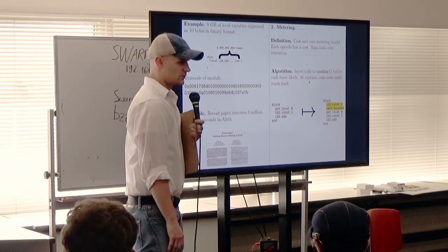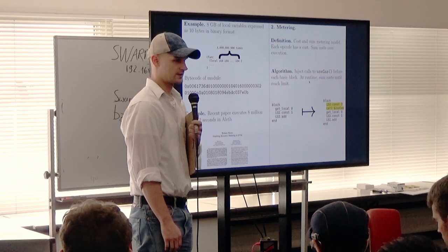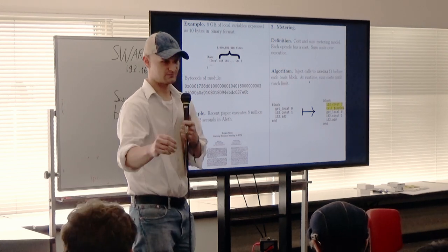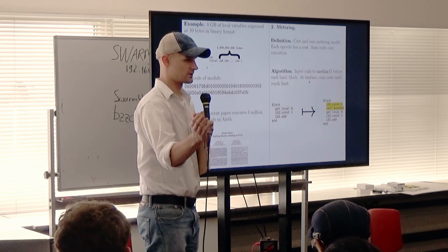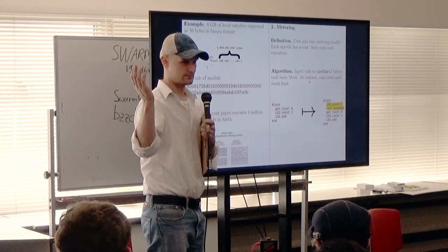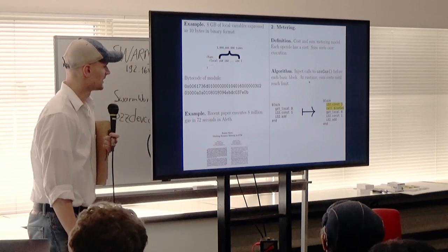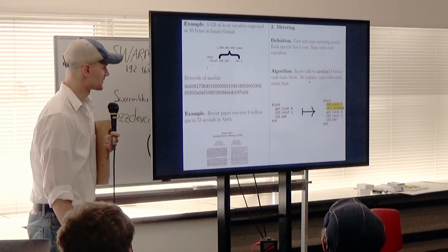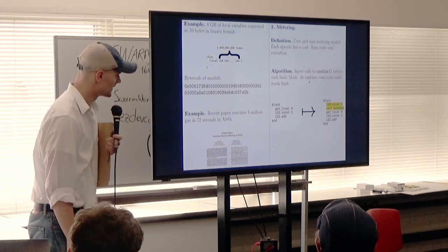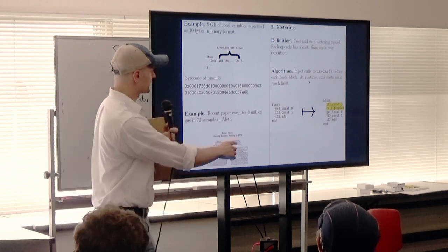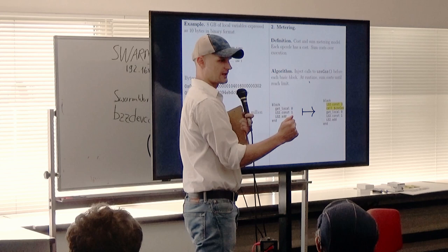Metering: most people know the cost-and-sum model — we assign a cost to each opcode, execute it, subtract from a gas allowance, and when we reach zero we revert everything. The idea is to do something similar for WebAssembly. We inject 'use_gas' calls into basic blocks — a basic block is guaranteed to execute all the way through, so we inject the cost for the whole basic block above it, then call use_gas. But this might have a slowdown — a metering slowdown.